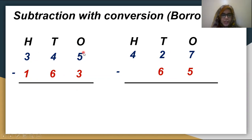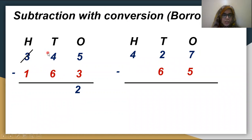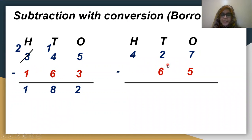First, subtract the ones digit, then tens, then hundreds. 5 minus 3 is 2. Then 4 minus 6 — since 4 is smaller than 6, we borrow from the hundreds. The 3 becomes 2, and the 4 becomes 14. 14 minus 6 is 8. Then 2 minus 1 is 1. The answer is 182.